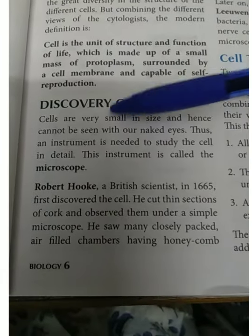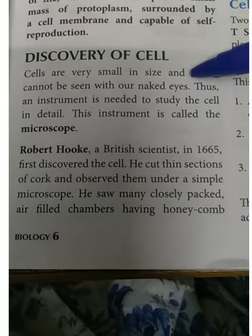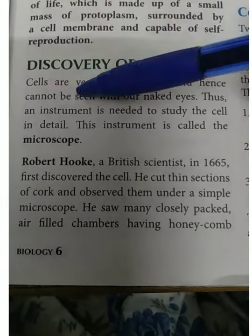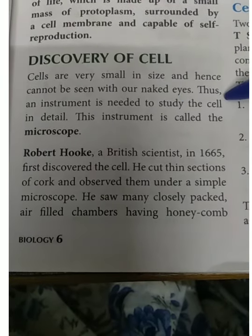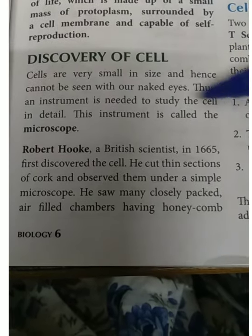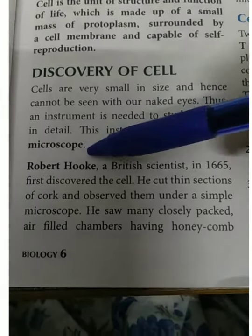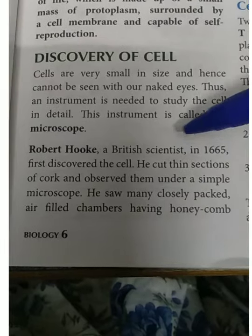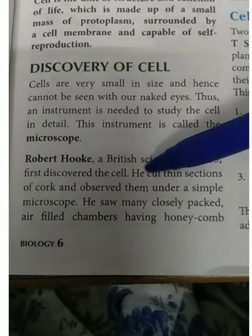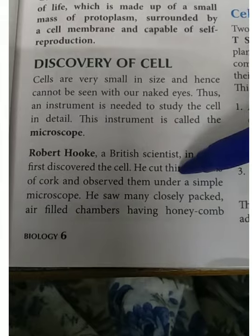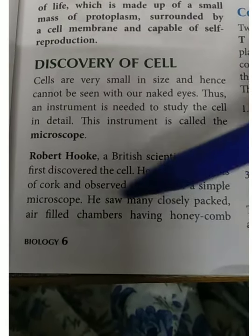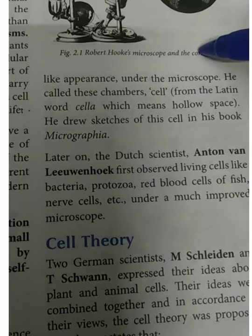The discovery of cells: cells are very small in size and hence cannot be seen with our naked eyes. We need an instrument called a microscope to see them. The first scientist who discovered the cell was Robert Hooke. He was a British scientist who discovered the cell by observing a cork through his microscope. He saw many closely packed air-filled chambers having a honeycomb-like appearance.